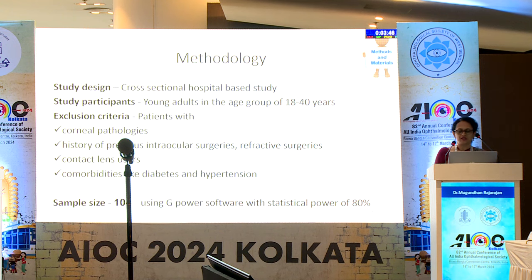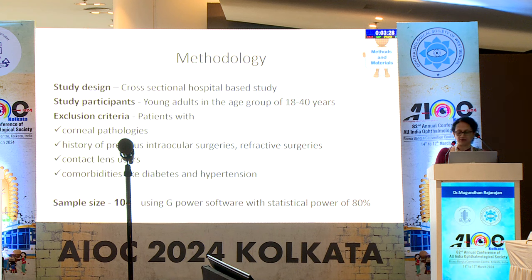The study planned to compare CCT by ultrasound pachymetry and anterior segment OCT in young adults aged 18 to 40 years, and to study the relationship of CCT obtained by anterior segment OCT with refractive status and body mass index. It was a cross-sectional hospital-based study. Exclusion criteria included corneal pathologies, history of previous intraocular or refractive surgeries, contact lens use, and co-morbidities like diabetes and hypertension. The panel asked which method would be closer to the physiological measurement, and the answer was probably the light-based method.